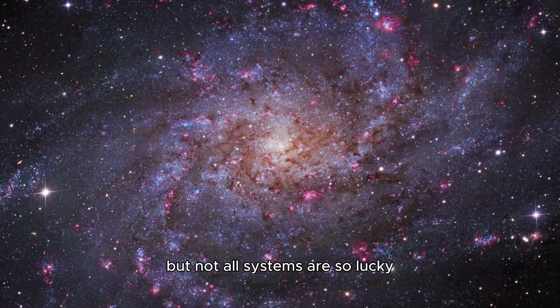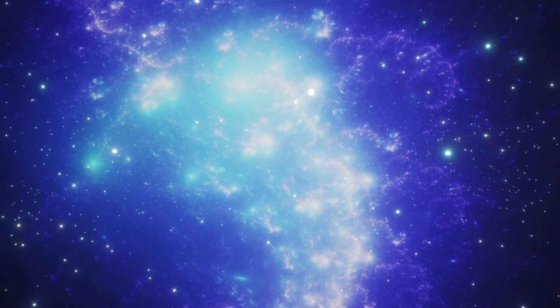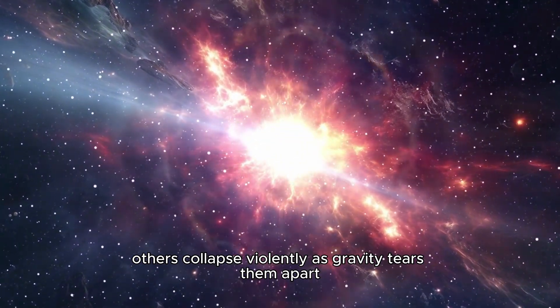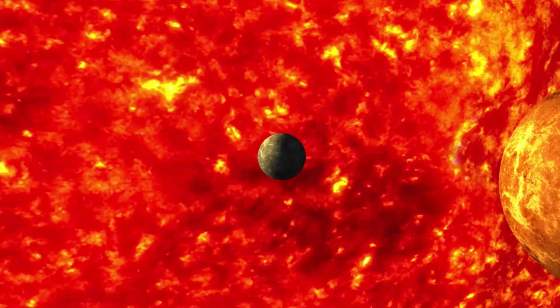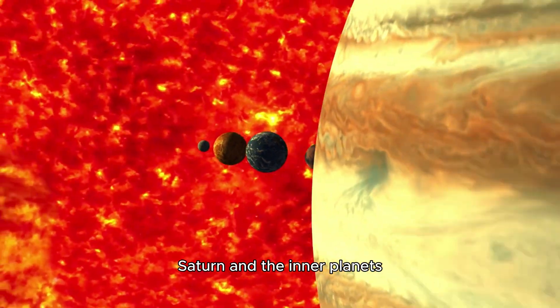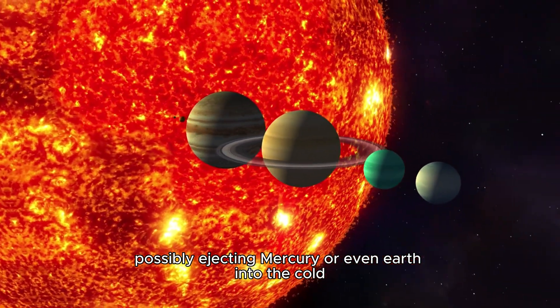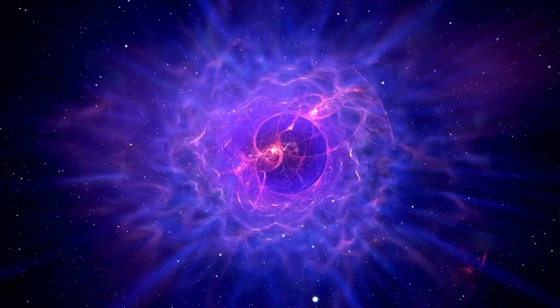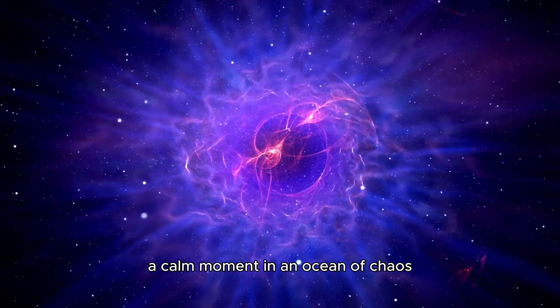But not all systems are so lucky. Some triple star systems eject one of their members into deep space, flinging planets into the darkness. Others collapse violently as gravity tears them apart. Even our own solar system isn't safe. Over billions of years, the gravitational interactions between Jupiter, Saturn, and the inner planets could eventually destabilize everything, possibly ejecting Mercury, or even Earth, into the cold interstellar void. We live inside a temporary balance. A calm moment in an ocean of chaos.